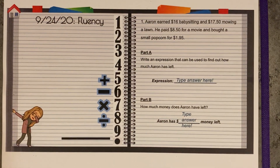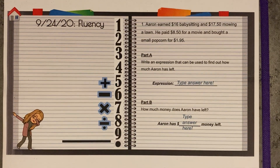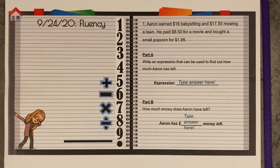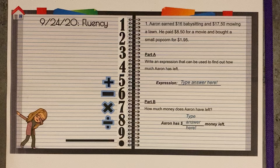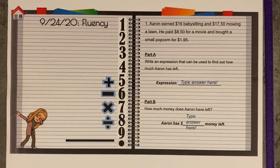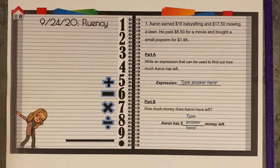September 24th, 2020 fluency. Number one: Aaron earned $16 babysitting and $17.50 mowing a lawn. He paid $8.50 for a movie and bought a small popcorn for $1.95.